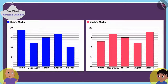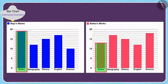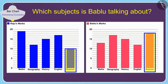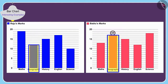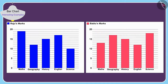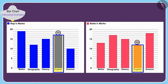Bablu says he got 5 marks more than Raju in one subject, and Raju got 5 marks more than Bablu in another. Children, can you tell which subjects Bablu is talking about? In geography, Bablu got 17 marks and Raju got 12 marks, so Bablu got 5 marks more than Raju. In English, Bablu got 12 marks and Raju got 17 marks, so Bablu got 5 marks less than Raju.